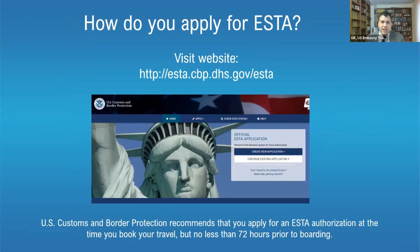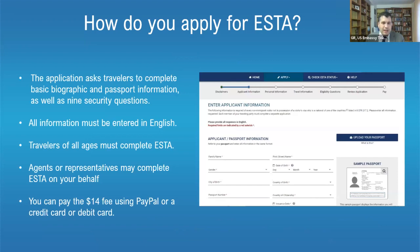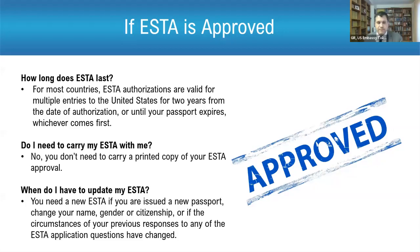The ESTA website is available and USCIS recommends applying at least a few days in advance. It takes basic biographic information in English. Travelers of any age — including babies — need their own ESTA applications. Someone can apply on your behalf, such as a travel agent. ESTA is valid for two years or until your passport expires, whichever comes first, and can be used for as many trips as you like. ESTA is electronic — no printed copy needed, just bring your passport. You must update your ESTA if you get a new passport or change your name.